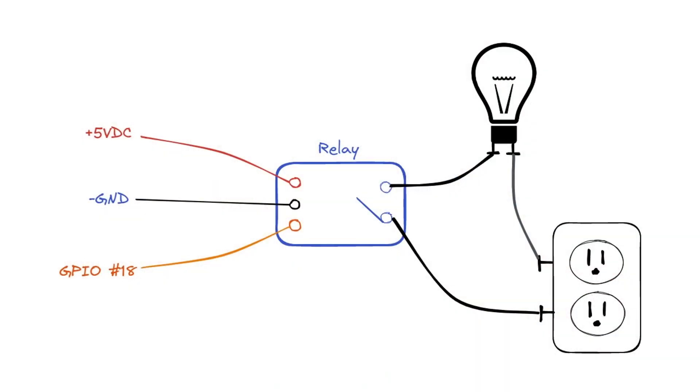A relay is an electromechanical switch that can be controlled by a small current. When the relay is energized, the internal magnetic switch closes. This way, you can control another circuit that isn't connected directly to your device. This is especially useful for controlling AC devices like light bulbs and fans.